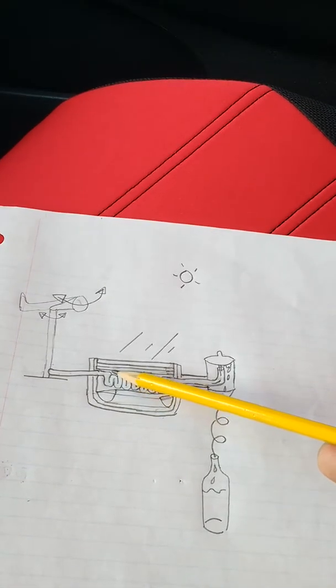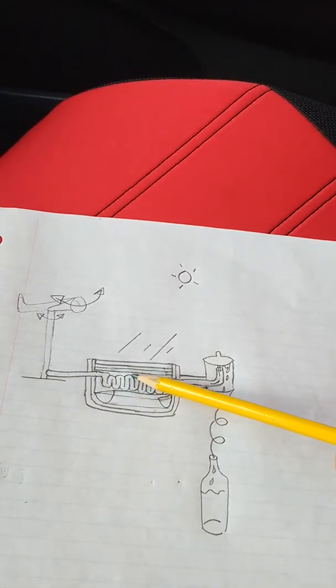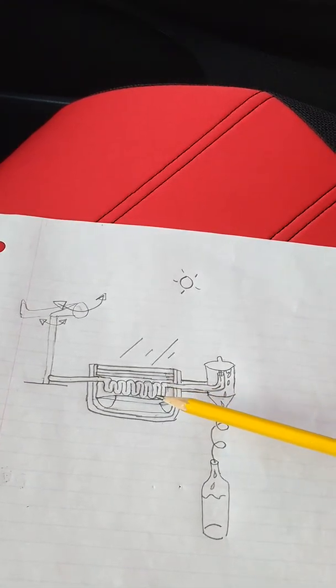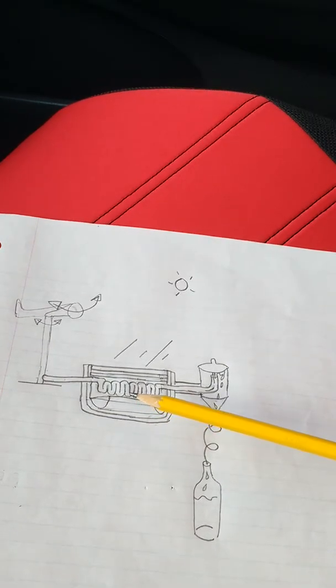And then we got the copper pipes, which are bent in there like this. These are the copper pipes, painted flat black. Not glossy, it has to be painted flat black.